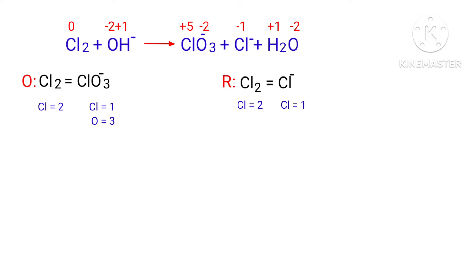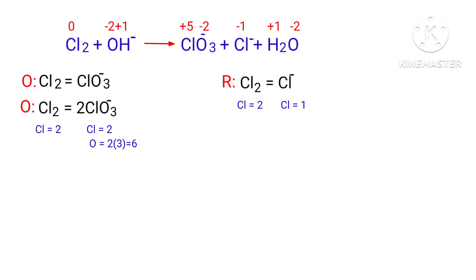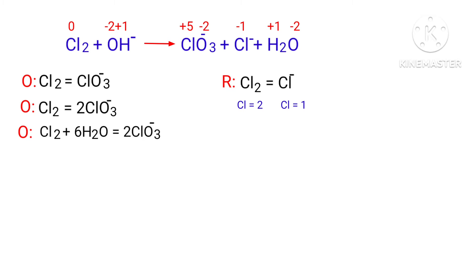In the oxidation half reaction, to balance the Chlorine atoms we need to put a coefficient of 2 in front of ClO₃⁻. The Chlorine atoms are now balanced. Now we need to balance the oxygen atoms. To do this, you can produce water molecules. Add H⁺ ions — the oxygen atoms are now balanced.